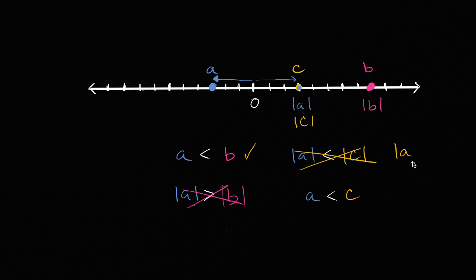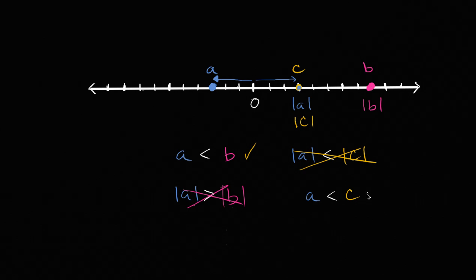Last one: A is less than C. Once again, A is to the left of C on the number line. That is true because our number line is increasing as we go from left to right. If one number is to the left of another number, it is less than the other number. So A is indeed less than C. And we are done.